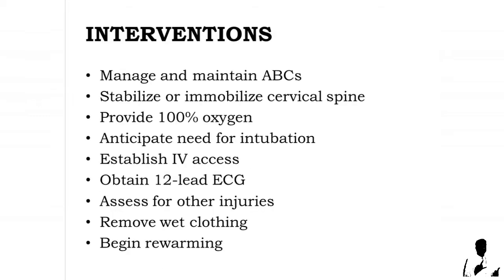Interventions for submersion injuries: manage and maintain airway, breathing, and circulation. Assume cervical spine injury in all near-drowning victims and stabilize or immobilize the cervical spine. Provide 100% oxygen via non-rebreather mask or bag-valve mask. Anticipate the need for intubation and mechanical ventilation if the airway is compromised — for instance, absent gag reflex. Establish IV access with two large-bore catheters for fluid resuscitation and infuse warmed fluids if appropriate.